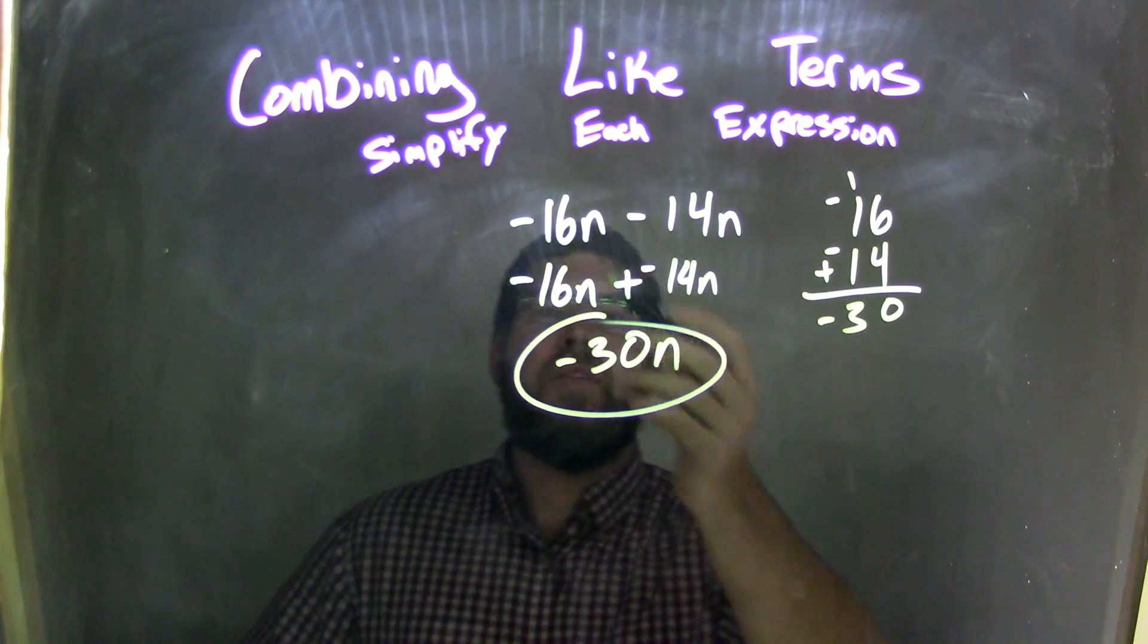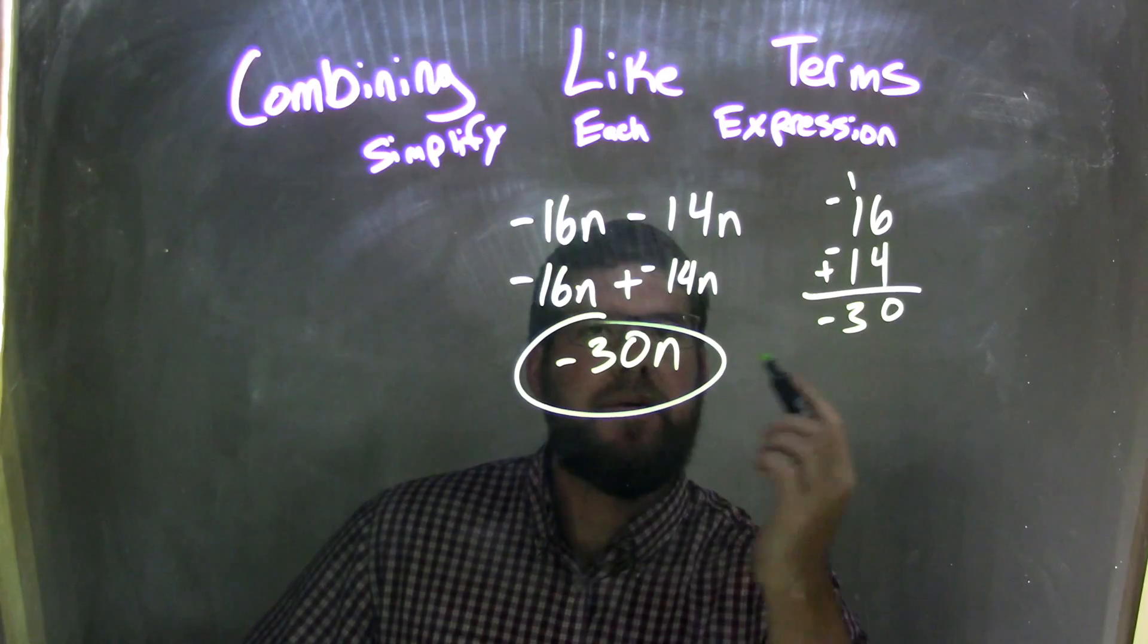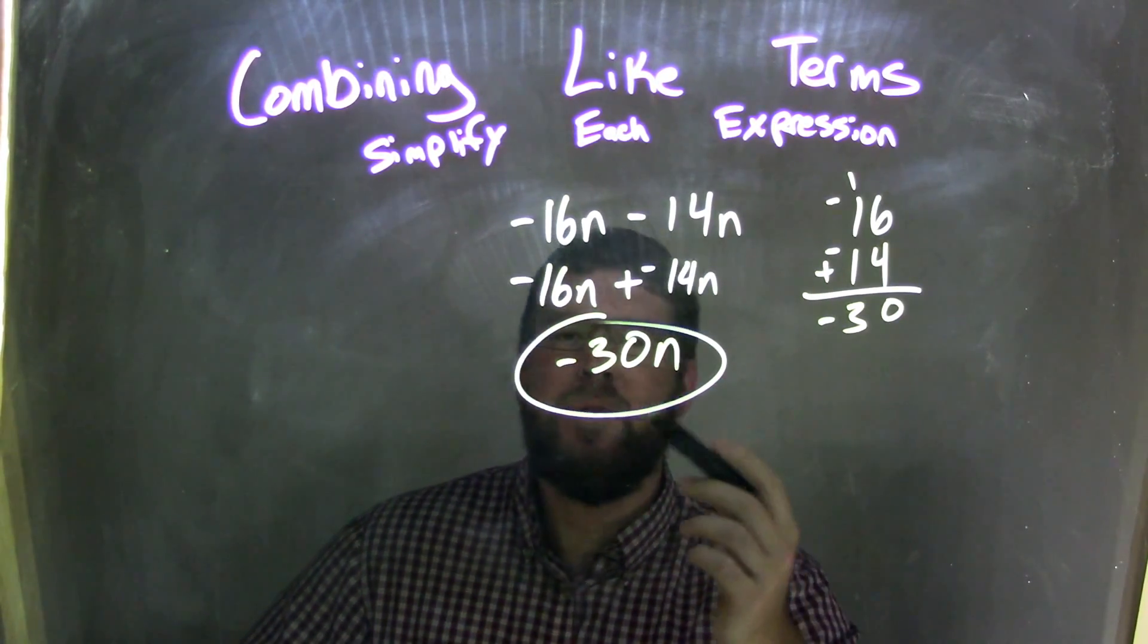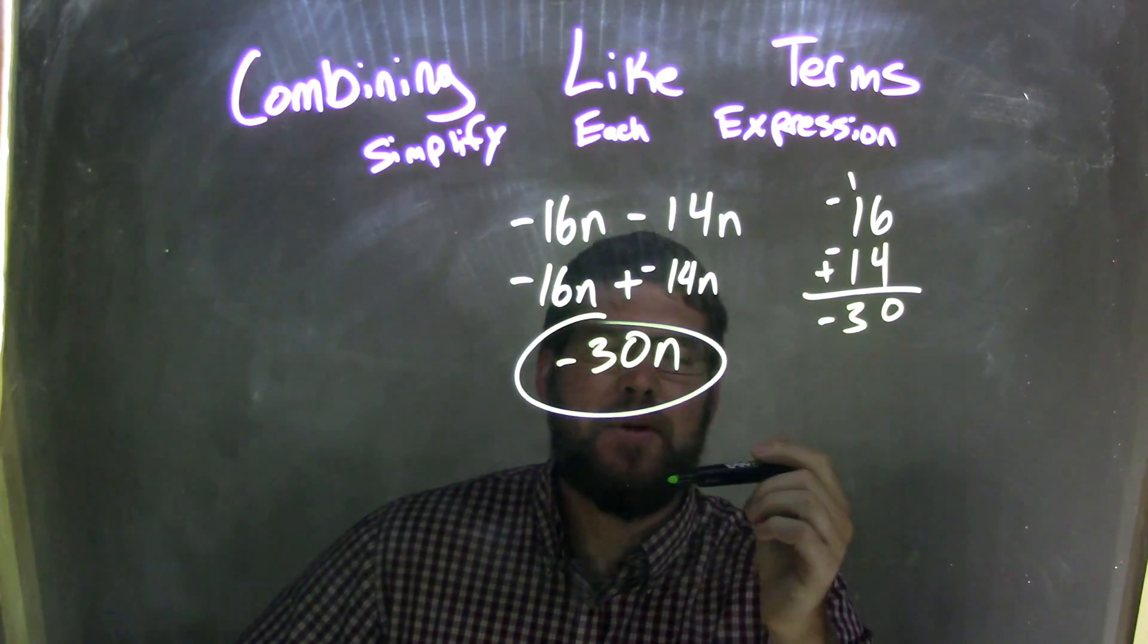Let's recap. We started with negative 16n minus 14n. The subtraction is the same thing as adding a negative, so I wrote negative 16n plus a negative 14n.